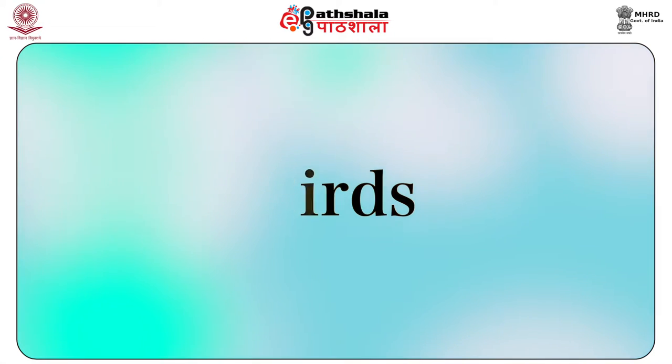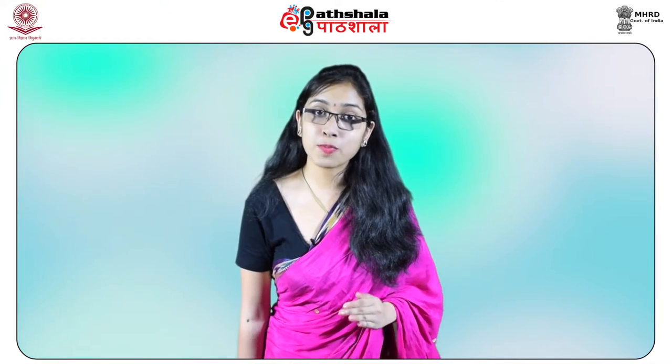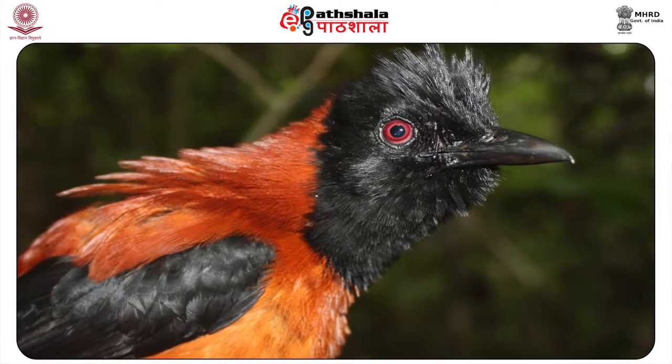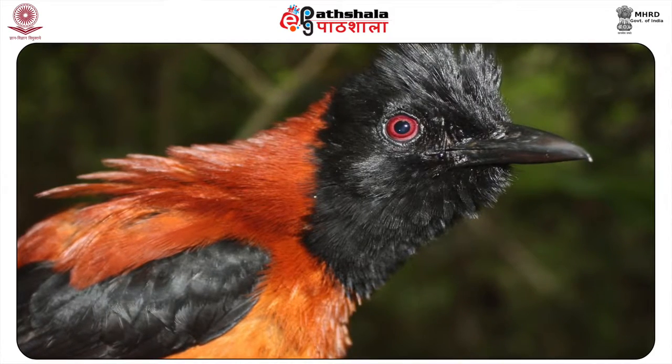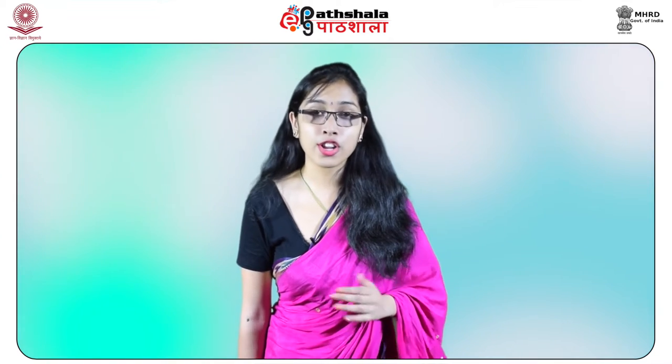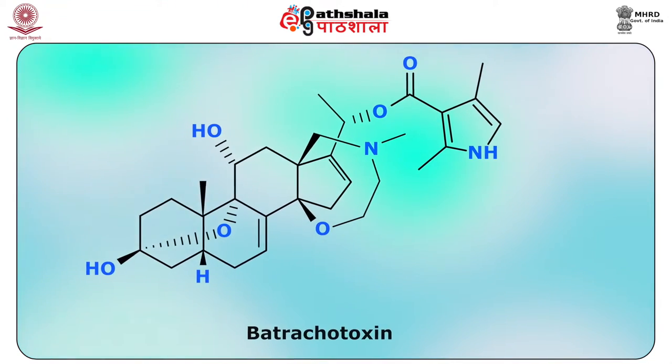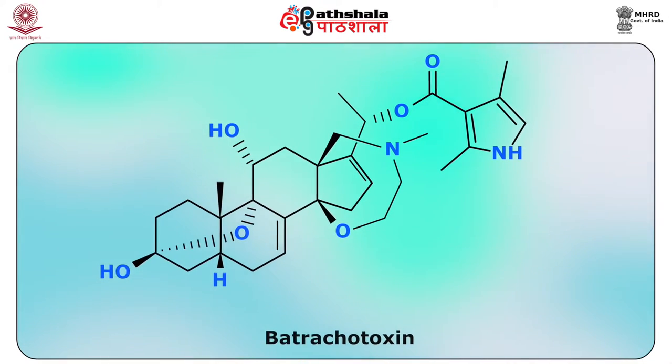Next we will study about birds. Certain birds possess poisons although they cannot produce them. Some pitohui birds' skin and feathers contain powerful neurotoxin alkaloids of the batrachotoxin group. These are supposed to aid the birds as a chemical defense either against ectoparasites or against predators such as snakes, raptors or humans. The birds perhaps do not produce batrachotoxin themselves. The toxins most likely come from the beetle genus Choresine, which is part of the birds' diet.